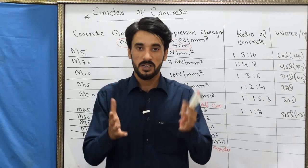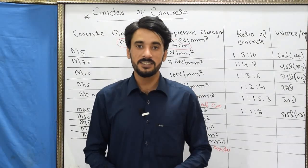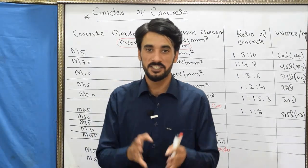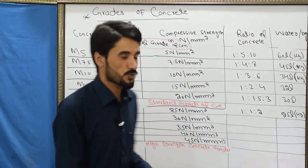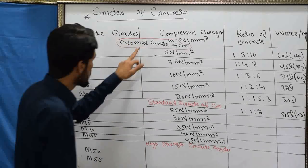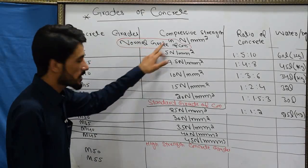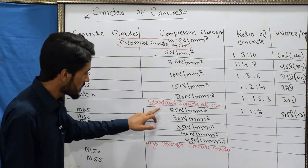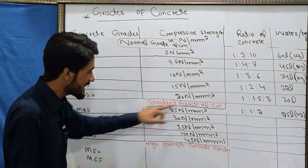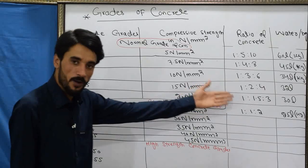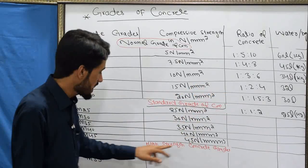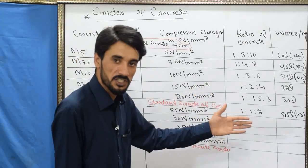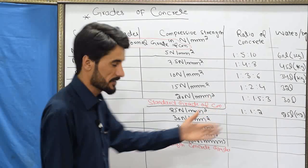The grades of concrete are divided into three categories: first, normal grade of concrete; second, standard grade of concrete; and third, high strength concrete grade.